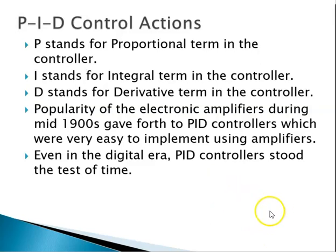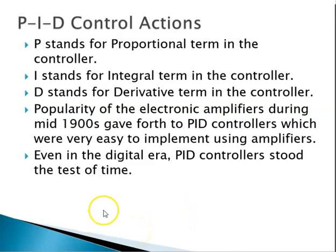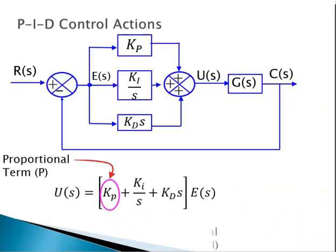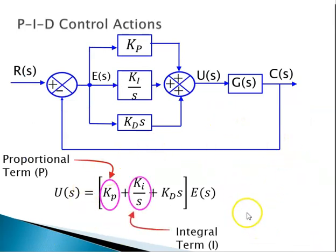In the mid-1900s, PID controllers came forth, very easy to implement with amplifiers and op-amps. Even now in the digital era, although analog circuitry has come down, PID controllers stood the test of time — in the digital form they continued to stand the test of time. We'll try to explain the PID actions in the form of this block diagram. K_p is called the proportional term.